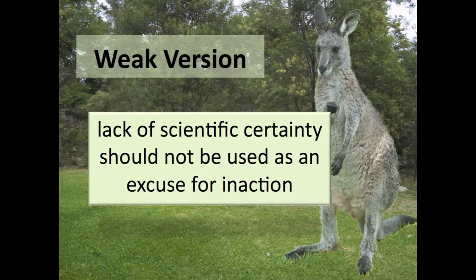Australian authorities have adopted the weakest possible version of the precautionary principle. This merely says that a lack of scientific certainty should not be used as an excuse for inaction in the face of potentially serious or irreversible environmental damage. However, other excuses can be used, and the most common excuse for inaction is the cost of action.